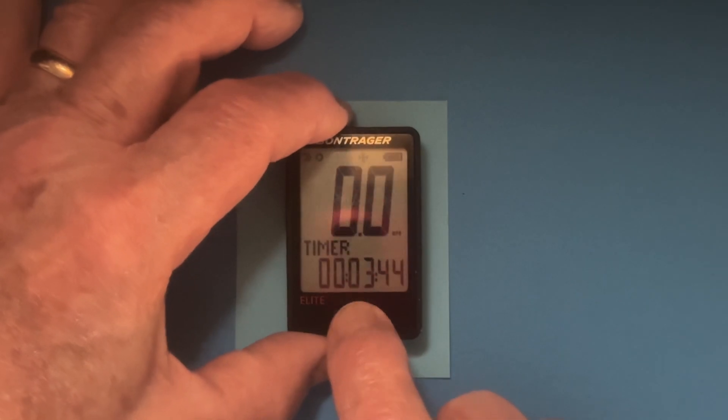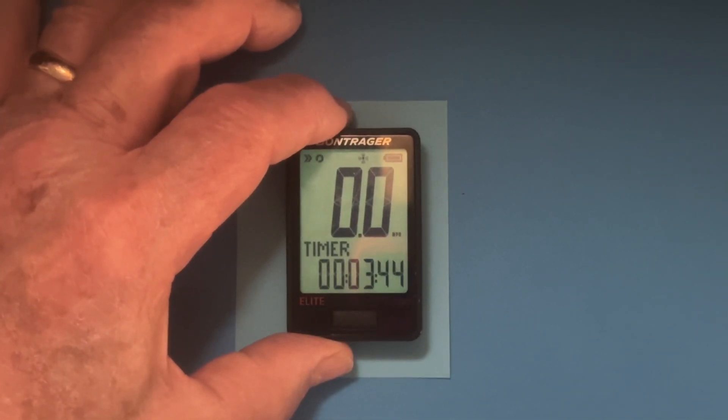Now, when you're riding, all you have to do is press the front button and the lighted screen will come on. It'll stay on for five seconds.